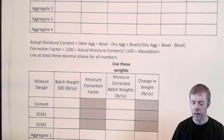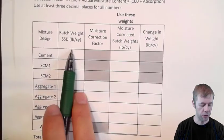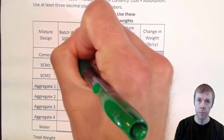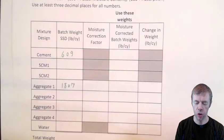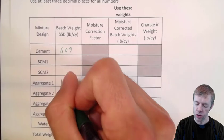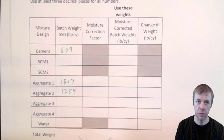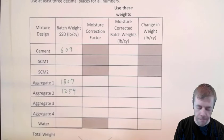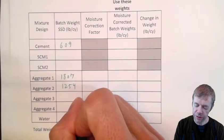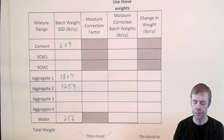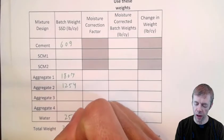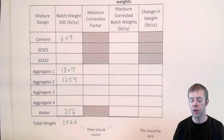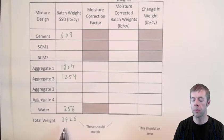So let's start writing down the basic things that were given in the problem — the mixture design. That information goes in the batch weights section. We had 609 pounds of cement, 1,807 pounds per cubic yard of aggregate number one (that's probably the coarse aggregate), 1,254 pounds of aggregate number two (that's the fine aggregate), and 256 pounds of water. If you total all of those numbers up, the total sum of the weight is 3,926 pounds. With most normal weight concrete mixtures, pounds per cubic yard is close to 4,000 — close to 2 tons.